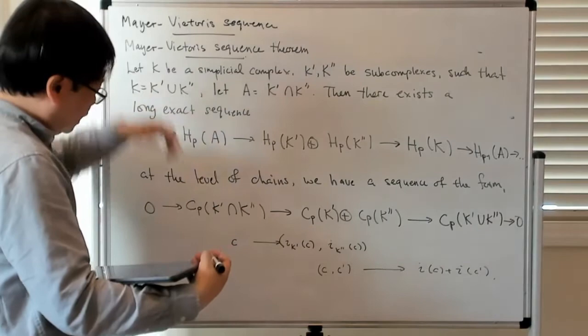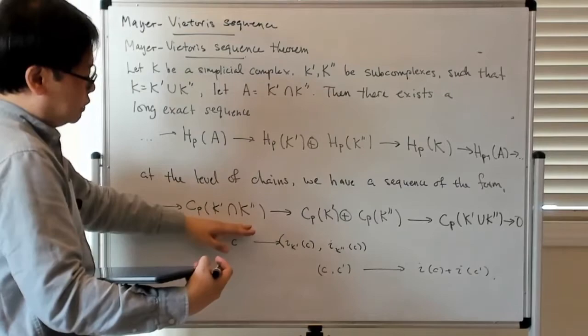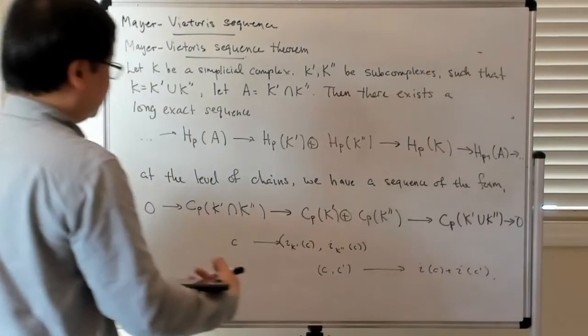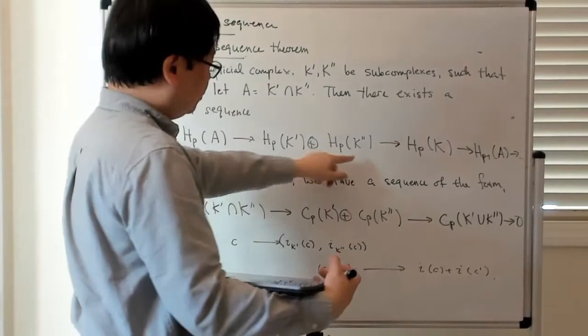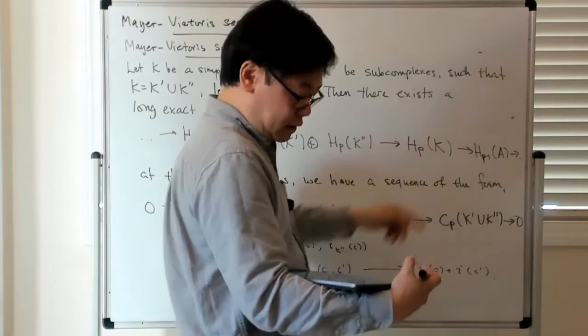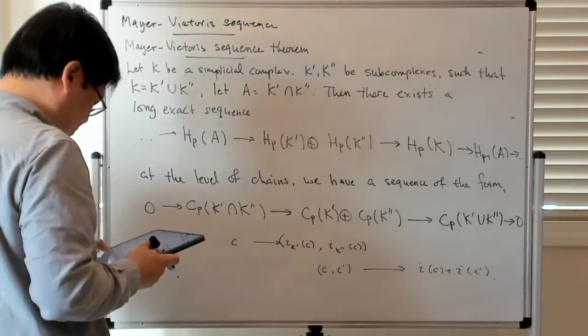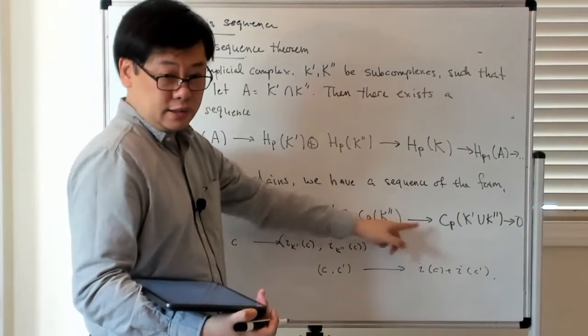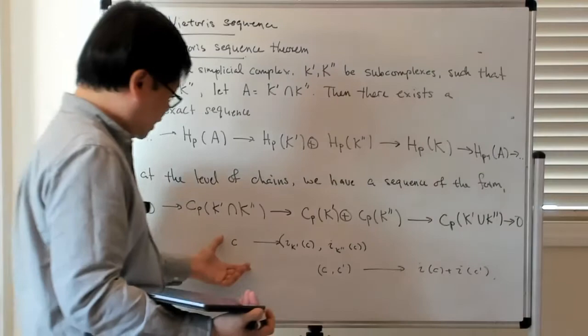So again, hopefully it's clear from our discussion that given this short exact sequence at the level of the chain complexes, by the zigzag lemma or the snake lemma, you get this sequence involving the intersection, the individual homology groups of the subcomponents, and then the homology group of the union.